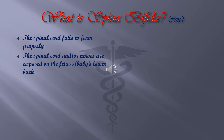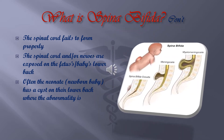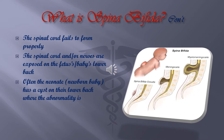The spinal cord and/or the nerves are exposed on the outside of the baby's lower back. Often the abnormality is present on the lower back. On the picture on the right, we observe Spina Bifida and its three types: from left to right, Spina Bifida Occulta, Meningocele, and Myelomeningocele.